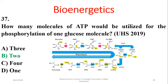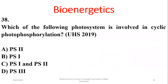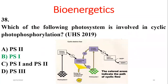Question 39: Which photosystem is involved in cyclic photophosphorylation? Cyclic photophosphorylation includes photosystem I only, while the Z-scheme or non-cyclic scheme includes both photosystem I and II. Beta is the right option.